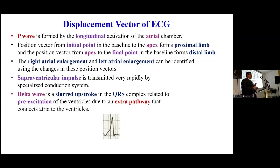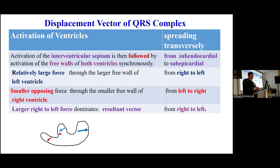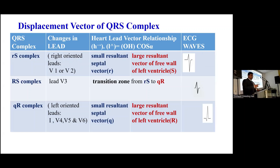Regarding displacement vectors: the P wave is atrial depolarization. Right atrial enlargement and left atrial enlargement can be identified using changes in these position vectors. Delta waves are slurring of the upstroke in the QRS due to pre-excitation of ventricles via an extra pathway connecting the atria to the ventricles. For the displacement vector of the QRS complex, it begins in the left subendocardial region of the lower third of the interventricular septum. The resultant septal vector is directed from left to right, as clearly shown in the diagram in blue. The larger resultant vector then goes from right to left.